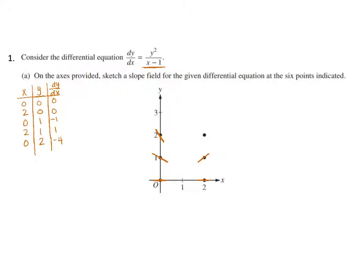Then I'm going to use the point (2, 2) and substitute that in. That's going to be 4 over 1, which is a positive 4. So I know here I'm going to have that positive 4 slope. And that's all there is to sketching a slope field.